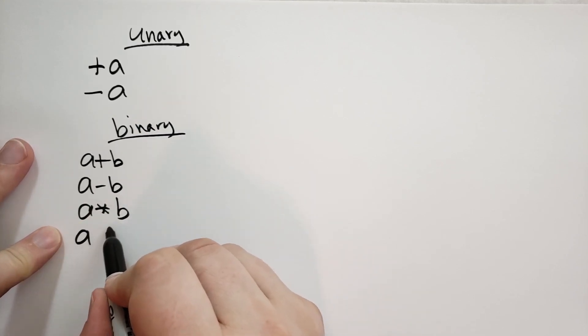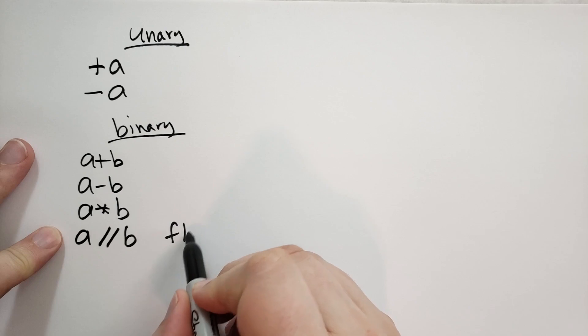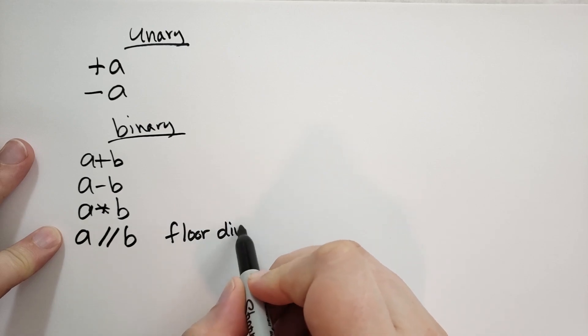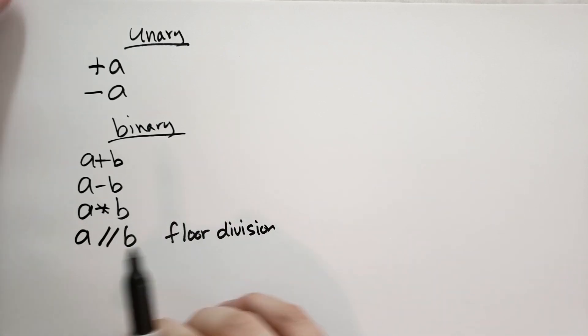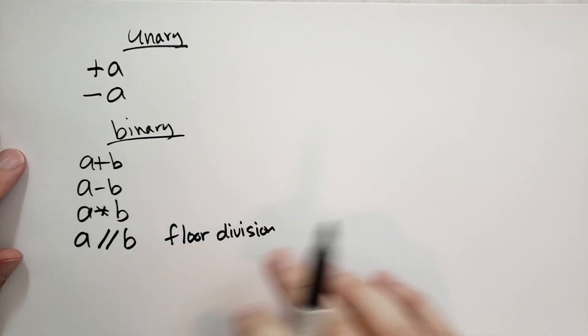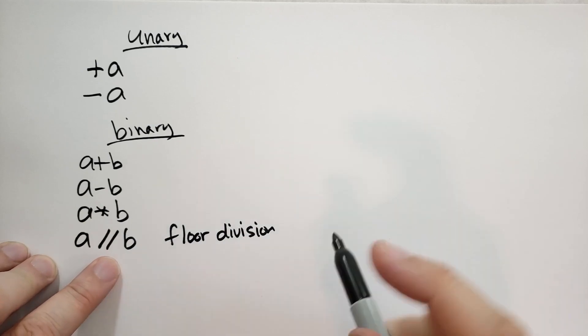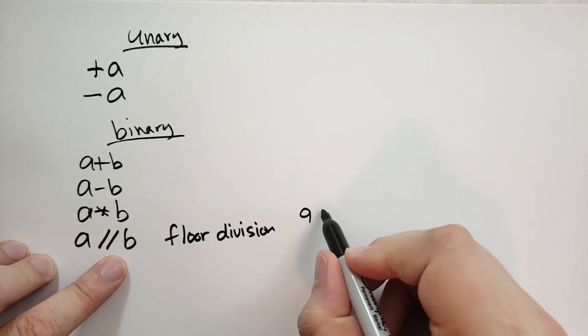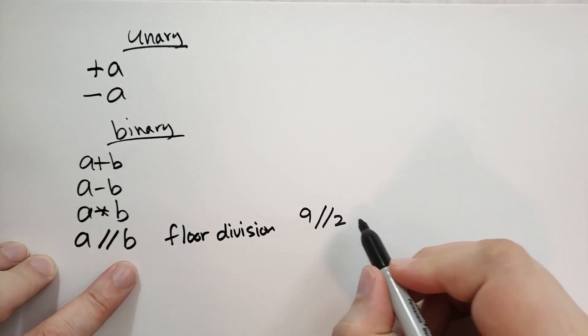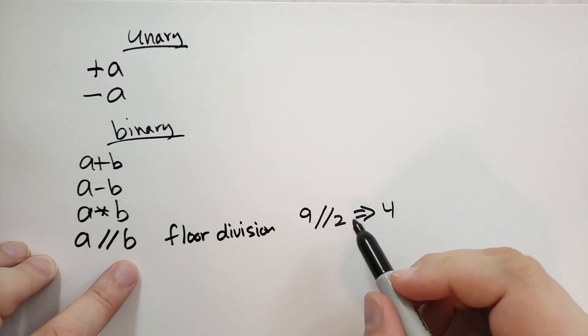You can also divide. And there's two ways to divide. This way is called floor division. If you have two slashes, it's going to do division, but it's going to round down, round towards zero. So nine double divide two is going to give you four.